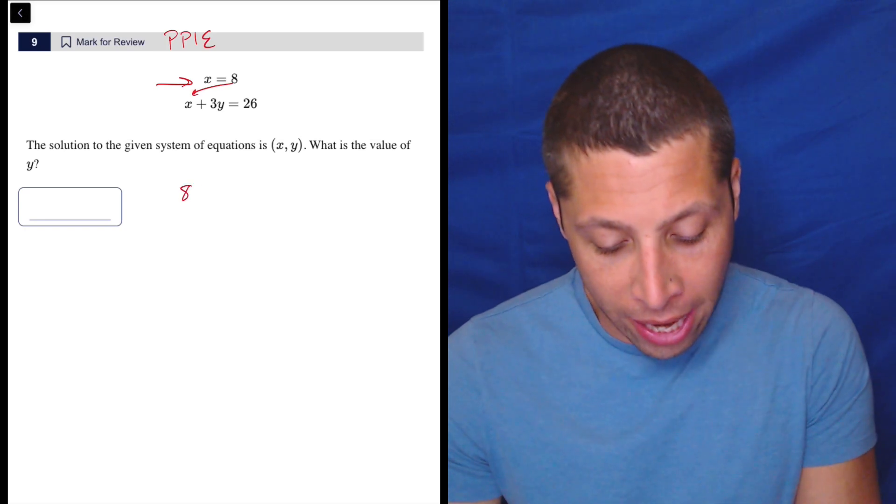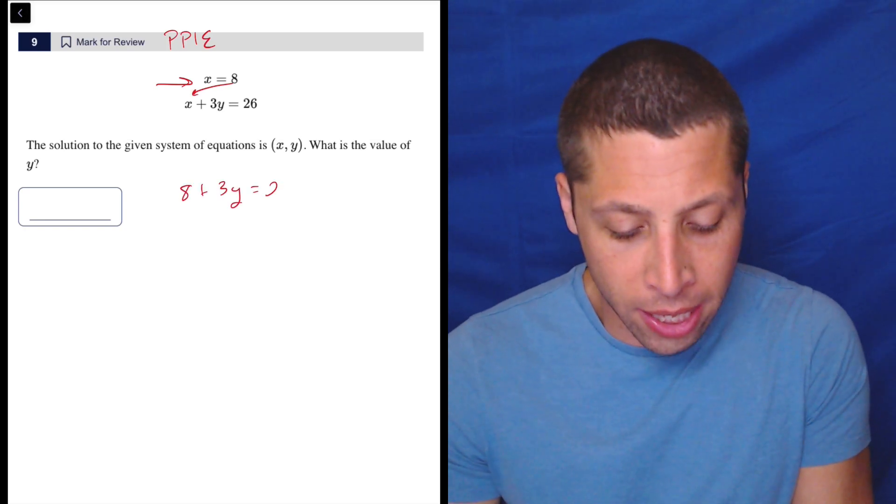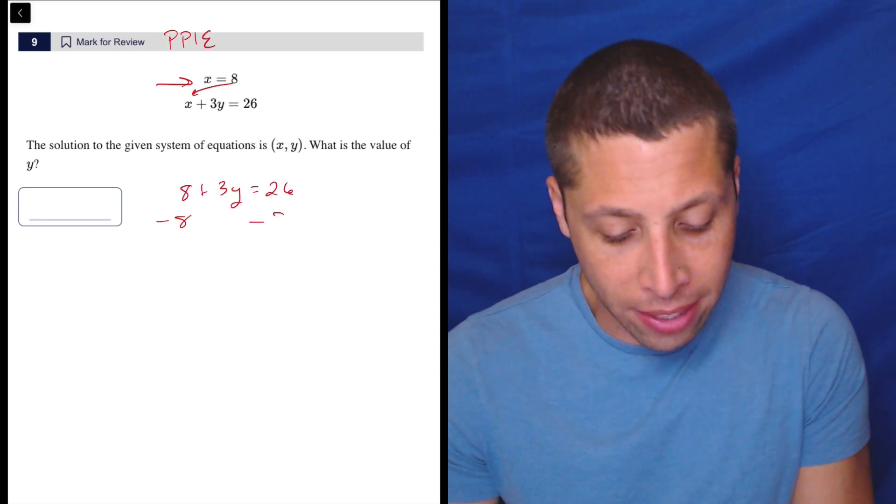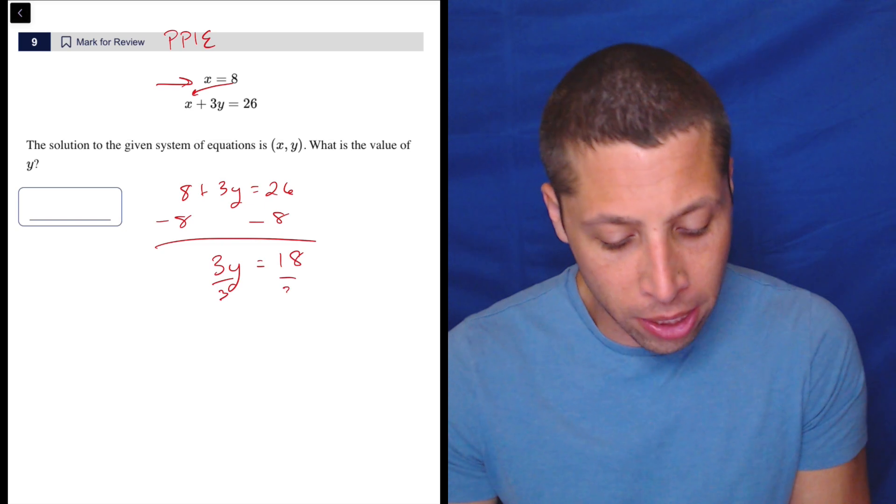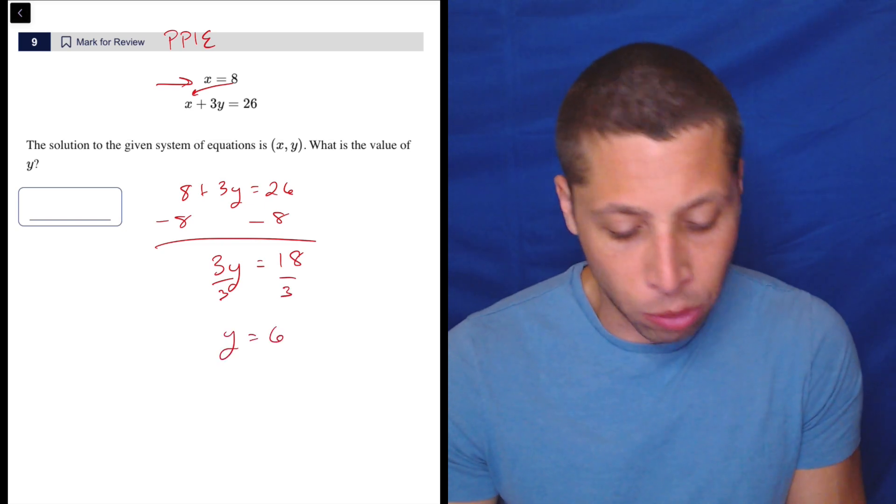So that goes right in there. We get eight plus three Y is 26, subtract eight. We're going to work our way towards that Y. So three Y is equal to, that's 18, divide by three, divide by three, Y is equal to six.